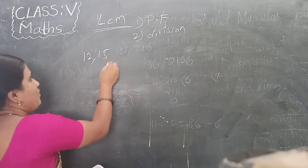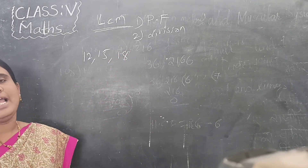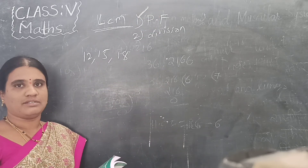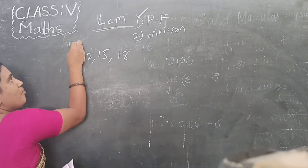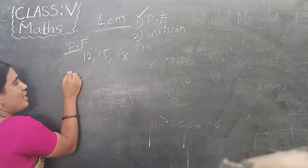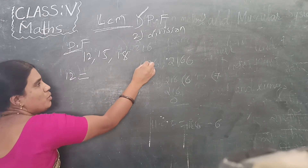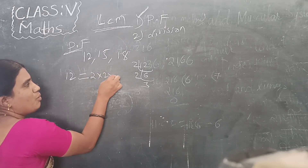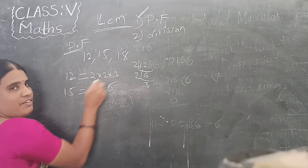For these three numbers, I am doing the LCM by the prime factorization method. How do we do the prime factorization? First: 12. You know how: 2 times 2 times 3 equals 12. So 12 = 2 squared times 3. Next: 15. 3 times 5 is 15.